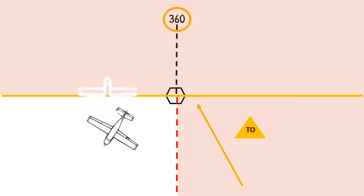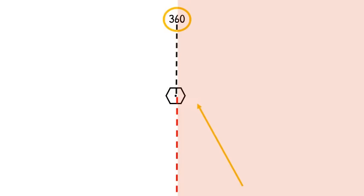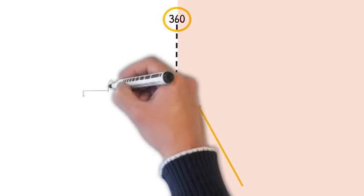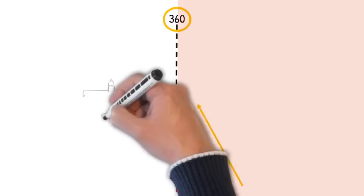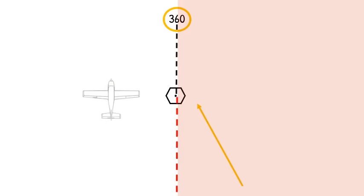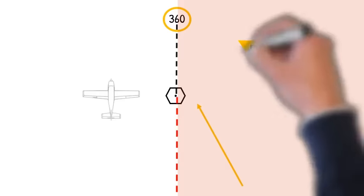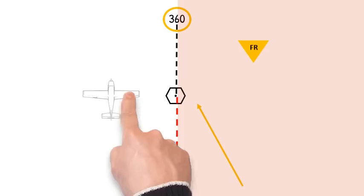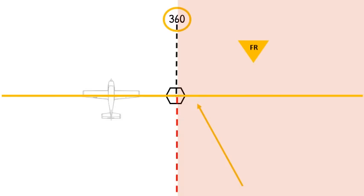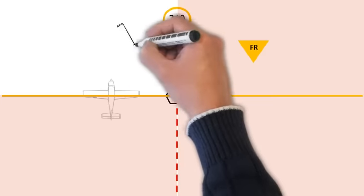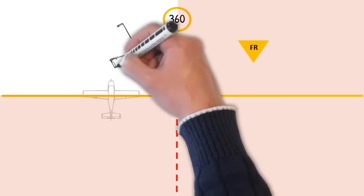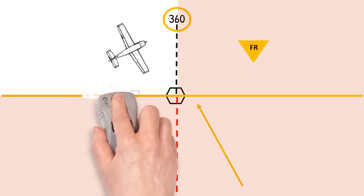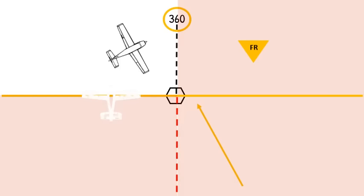So in this example we cannot be in the northern section; we have to be in the lower left quadrant. Now using that same example: we've got 360 tuned in the OBS, the CDI is deflected to the right meaning we're left of course, and now we've got a FROM flag. So we're going to draw a horizontal yellow line to determine which side of the VOR we're on. Because we've got the FROM flag, we're on the same side as the 360 radial, since it radiates from the VOR — and that's how we determine our position in this example.